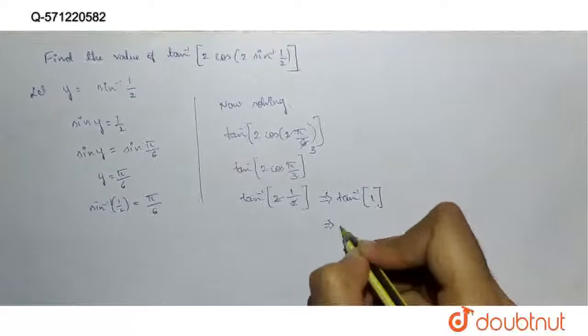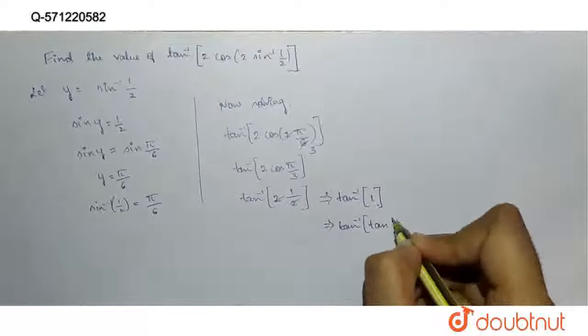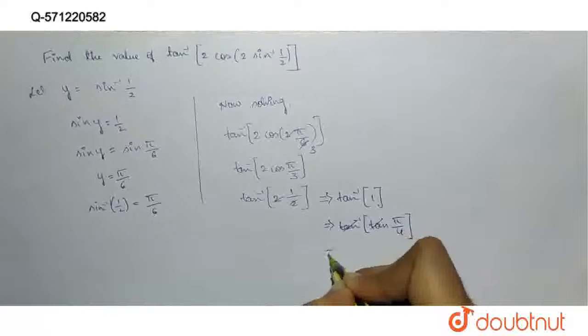1 can be written as tan 45 degree. That is tan inverse of tan pi by 4. Pi by 4 is 45 degree. Tan and tan inverse will get cancelled.